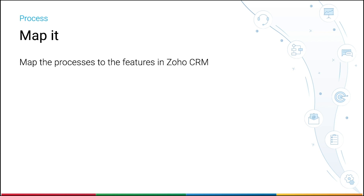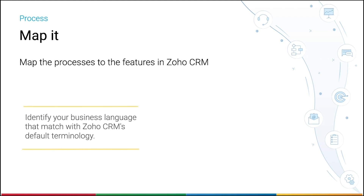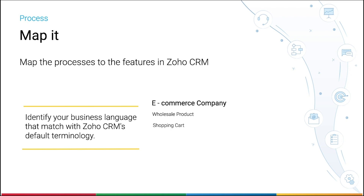The visual representation of the process, like flow diagrams, will help you analyze the extent of customizations needed and processes or steps that require automation. As you're working on the process blueprints, identify your business language that matches with Zoho CRM's default terminology. While an e-commerce company may use terms like wholesale products, shopping carts, discount codes,